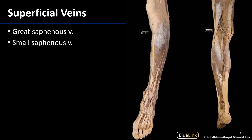For the lower limb there are two veins that you're going to want to know about. The first being the great saphenous vein. The great saphenous vein helps to drain the dorsum of the foot. It has a very reliable relationship to the medial malleolus, so it is found just anterior to the medial malleolus, and then is going to ascend the medial surface of the leg and thigh.